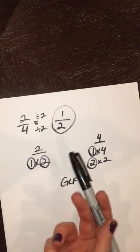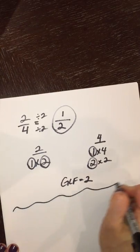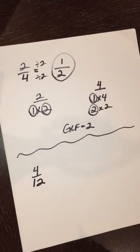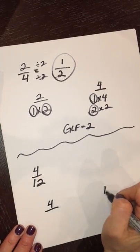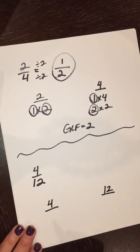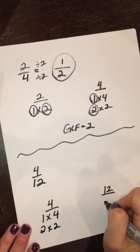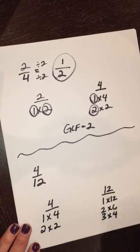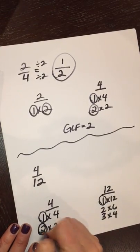This is also called reducing, so there's a couple different names for it. Let's try another one. Let's say we want to find the simplest form of four-twelfths. I'm going to go ahead and find the greatest common factor of four and twelve. So I list all of the factors, and then I go ahead and find the ones that they have in common.